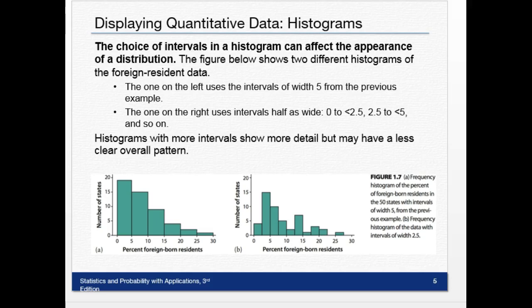Now, histograms with more intervals show more detail, but may have less clear overall pattern. So you can see what's happening here. It gives us more detail, but may or may not give us more pattern to have more intervals. Like I said, you want to have 5 as a minimum. You can do more, and it can give you more features of the distribution.